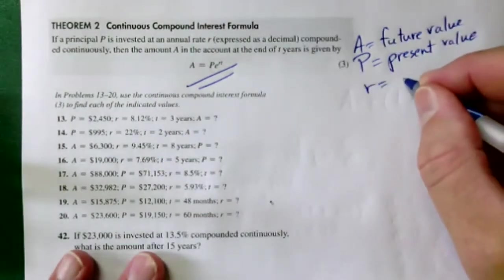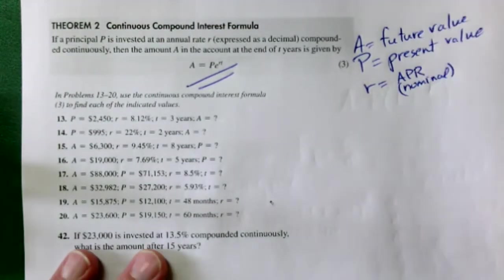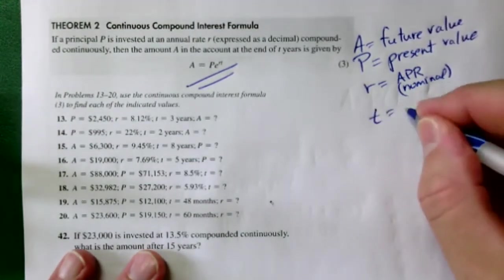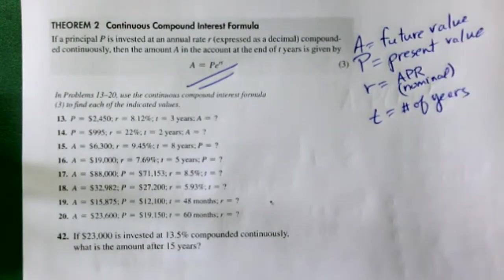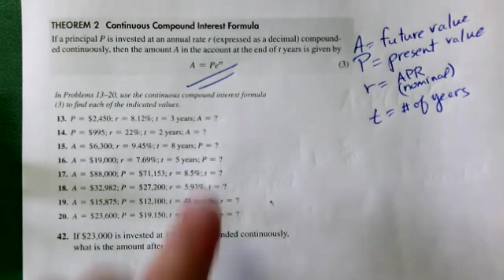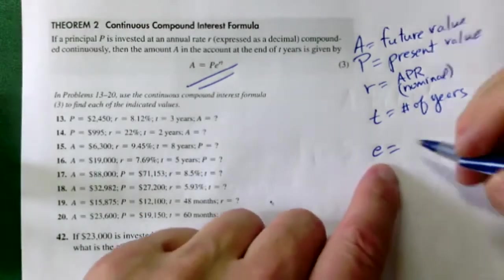In the continuous interest formula, R is the APR — the annual percentage rate, sometimes called the nominal rate — and T is the number of years. There's a new number in the formula: E. This is the natural number, called natural because it appears in many exponential growth models and occurs naturally. It's like pi in the sense that it's an irrational number — its decimals continue without repeating or terminating.